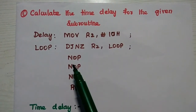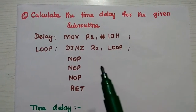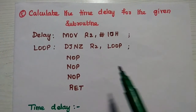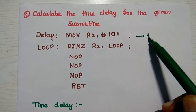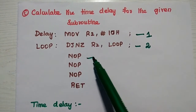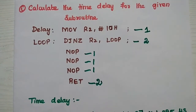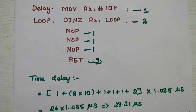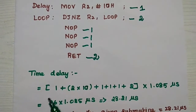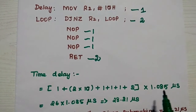We are going to calculate the total time delay produced by this subroutine. To do that, we take the machine cycles required to complete each instruction. For the MOV instruction, it requires one machine cycle. For DJNZ, it requires two machine cycles. Each NOP requires one machine cycle, and RET requires two machine cycles.